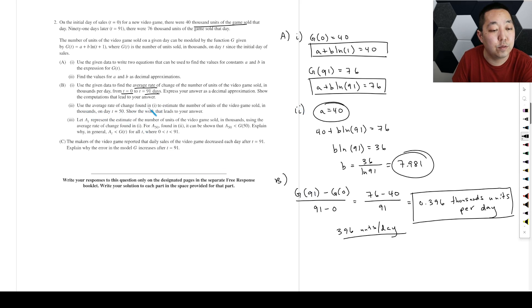Use the average rate of change found in I to estimate the number of units of video games sold in thousands on day T equals 50. Show the work that leads to your answer. So, for example, the way they want you to think about this one is to say, well, if you're doing this many units per day, thousands of units, so we're going to start with 40, and you're going to do this many units, thousands of units per day, but how many days on day 50? So day 50 is 50 days later.